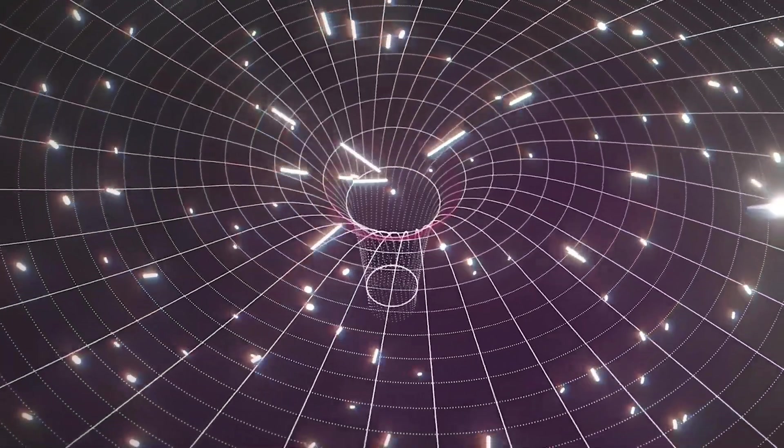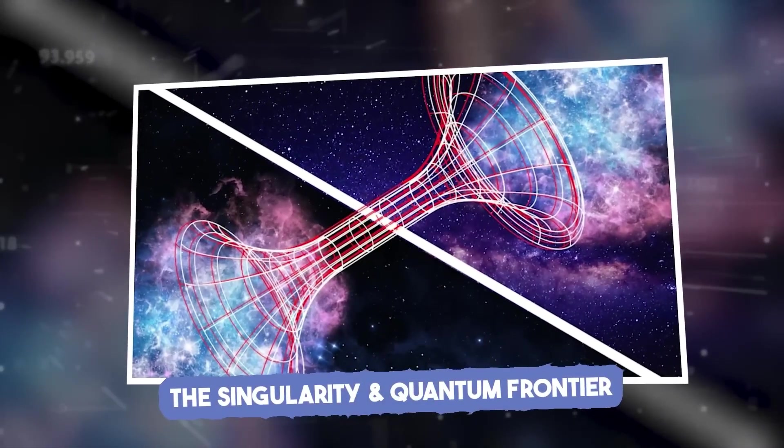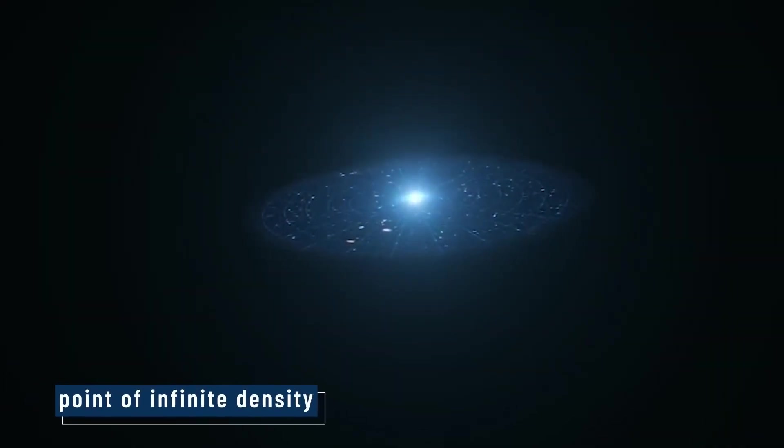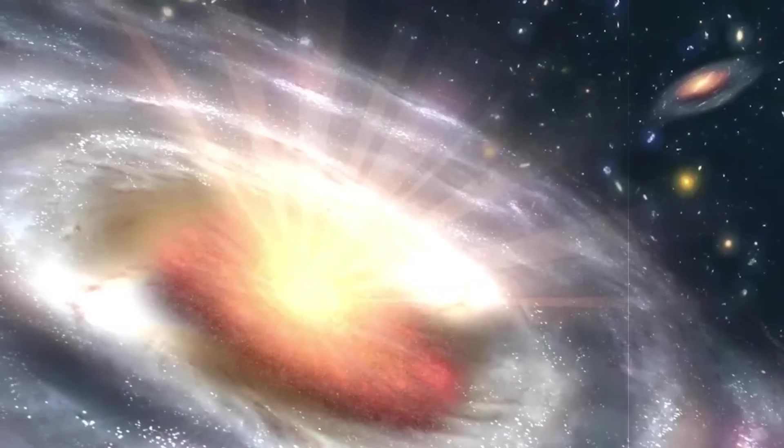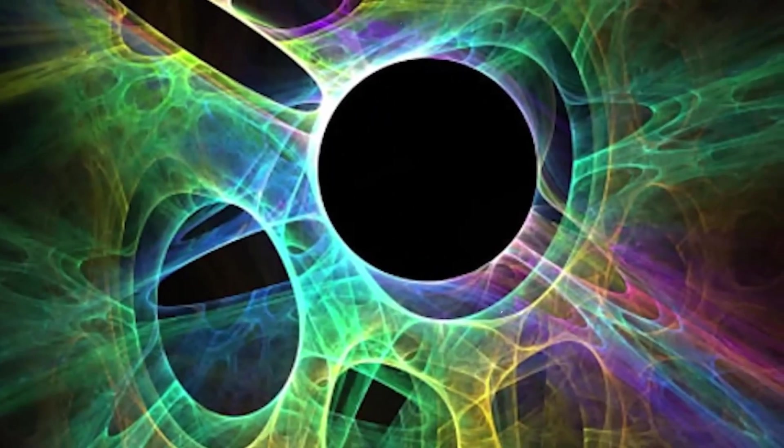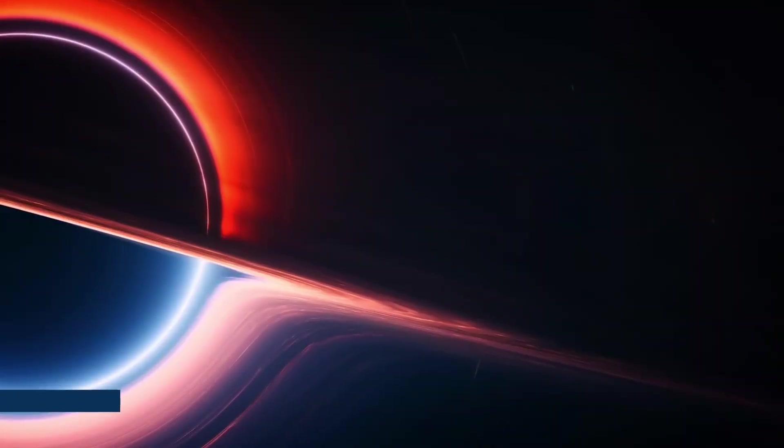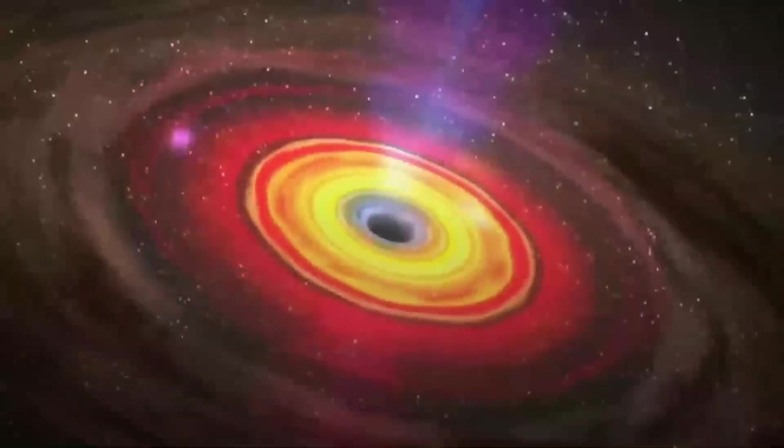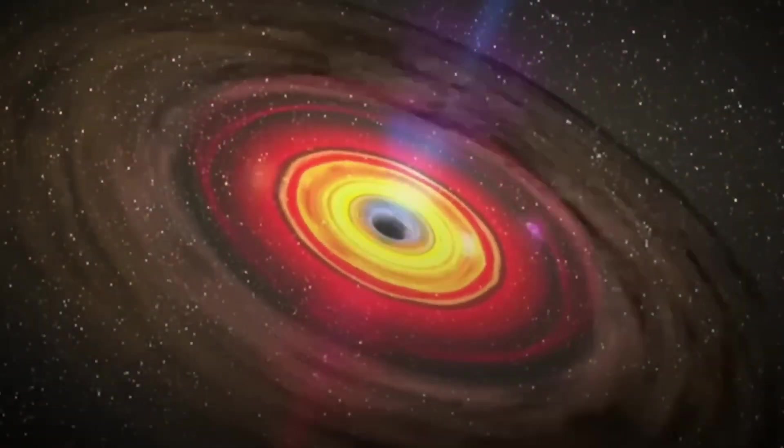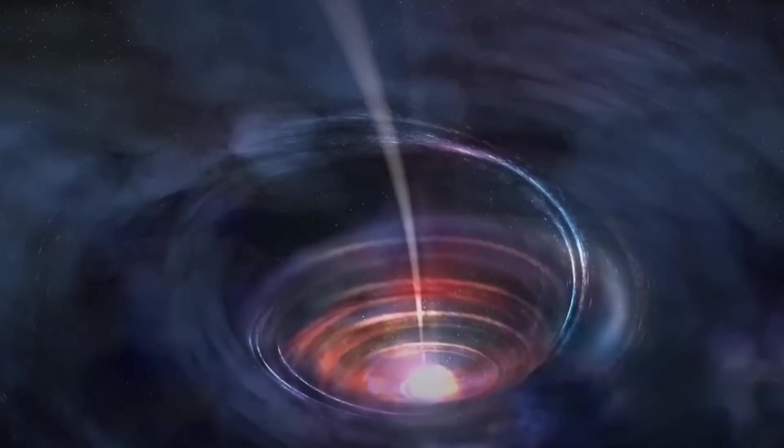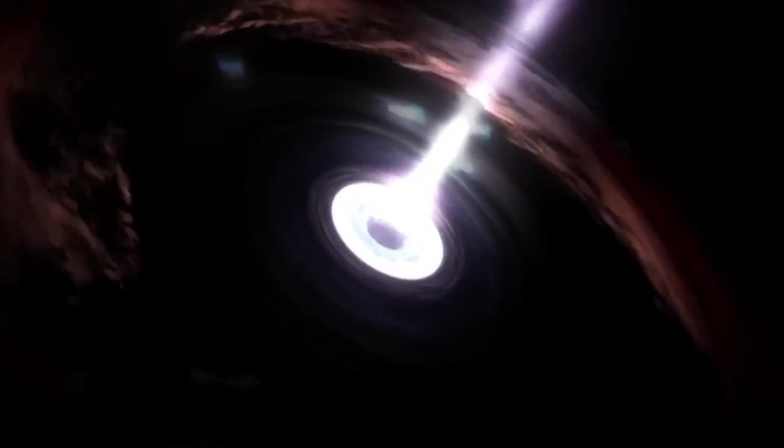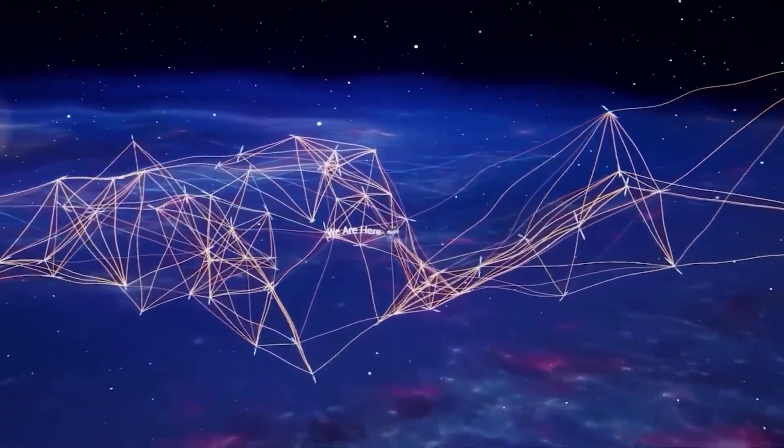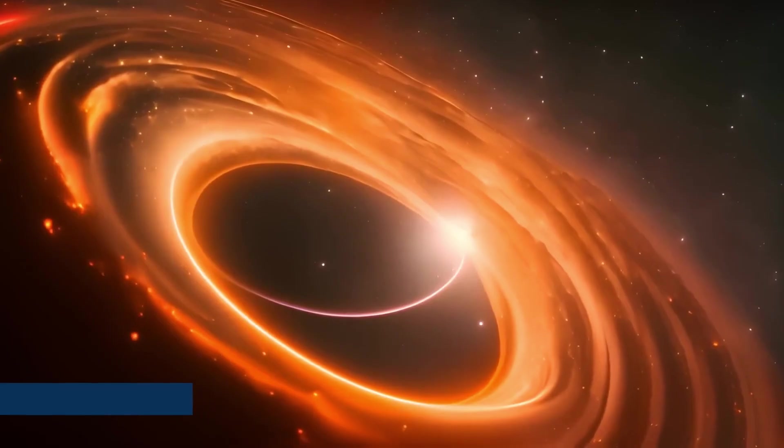Another interesting twist is that not all the matter that falls toward a black hole actually gets eaten. A significant portion of it gets violently flung outward. When matter crashes in too quickly, it heats up tremendously, and can form powerful, narrow jets of radiation and particles, some of which travel at nearly the speed of light. These jets can stretch across thousands of light years, effectively pushing gas away from the galactic center. So in many important ways, black holes function more like cosmic engines than simple cosmic vacuums. As astronomer Avi Loeb summarized, galaxies don't fall into black holes. Black holes rise at their centers.